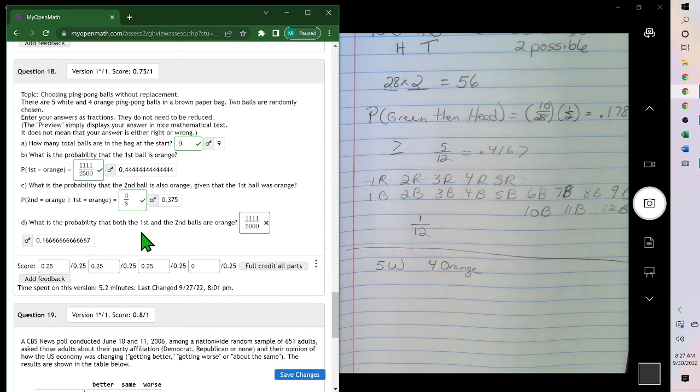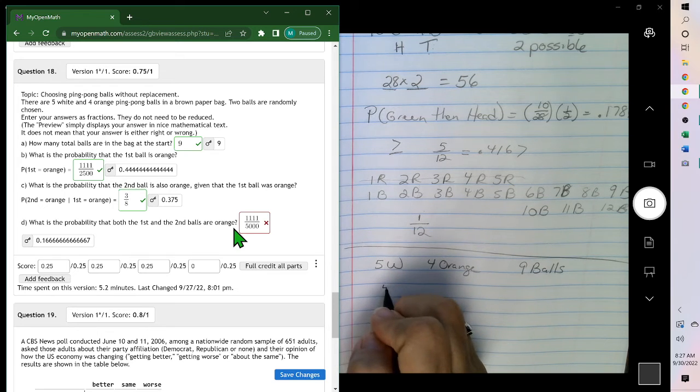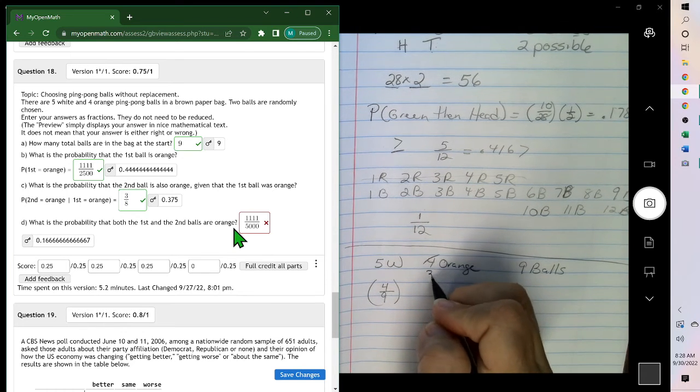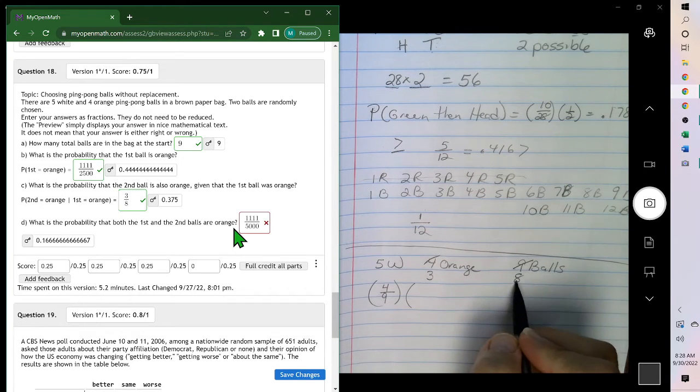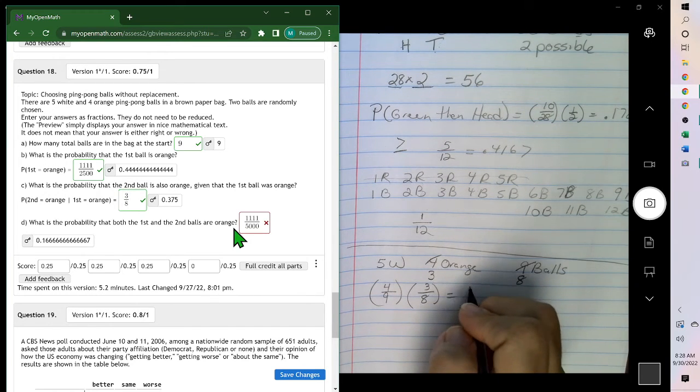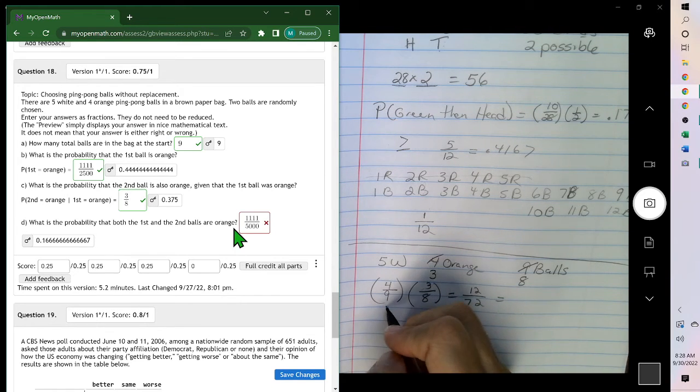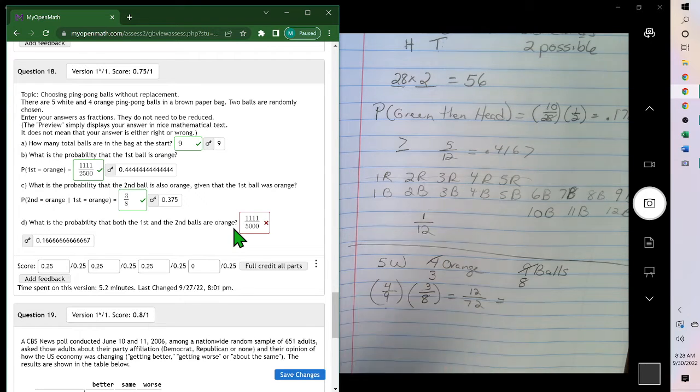Okay, so if we look at this one, what is the probability that both the first ball and the second ball are orange? There's nine all together, so the first one being orange would be four ninths, but now there's only three orange ones because we're not putting it back in there. So the probability, and there's total eight, so it's three eighths, and that will reduce to one-sixth.